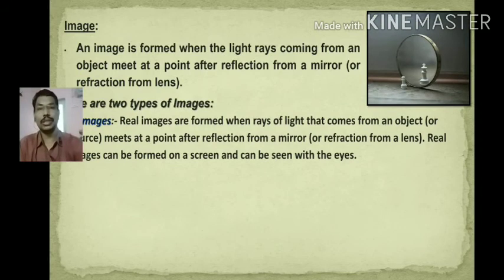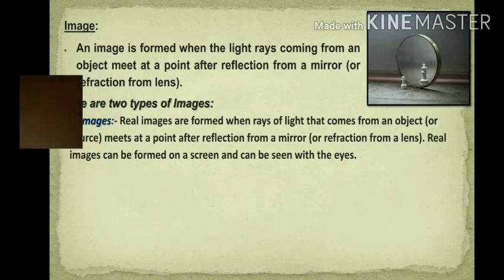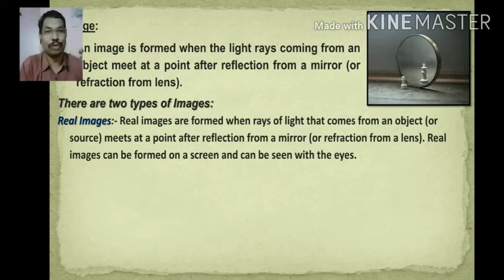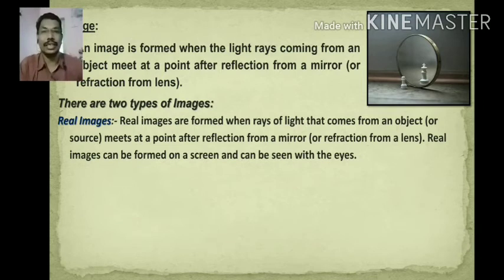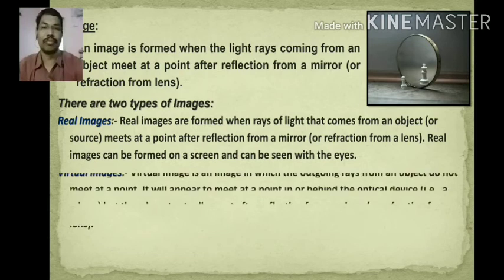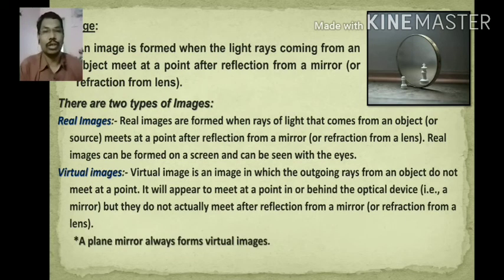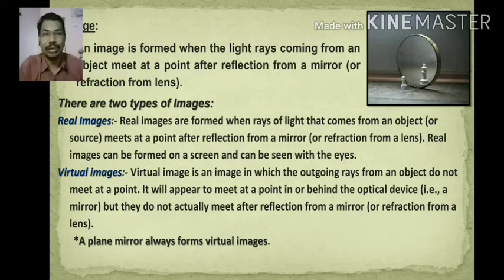There are two types of images: real image and virtual image. If light rays after reflection directly meet, a real image is formed — we can see it with our eyes and it can be captured on a screen. A virtual image is one where the outgoing rays from an object do not actually meet, but they appear to meet by the back extension of the light rays. It is called a virtual image.